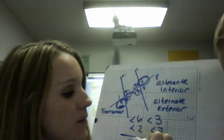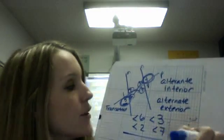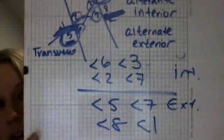So angle 5 and angle 7 alternate exterior angles. Then angle 8 and angle 1 are also alternate exterior angles.